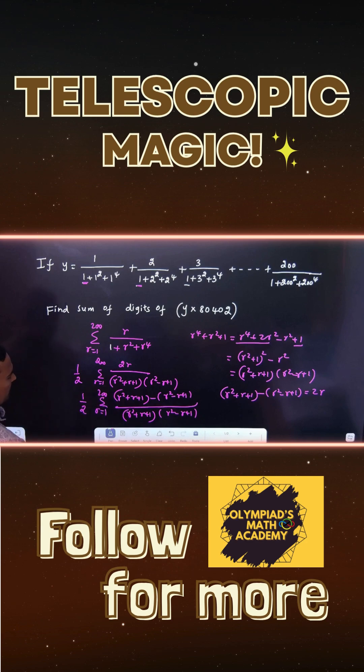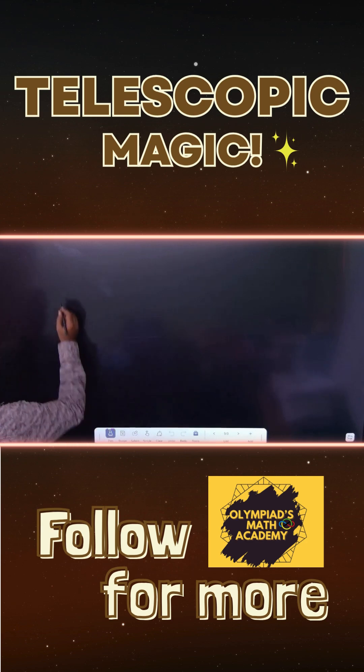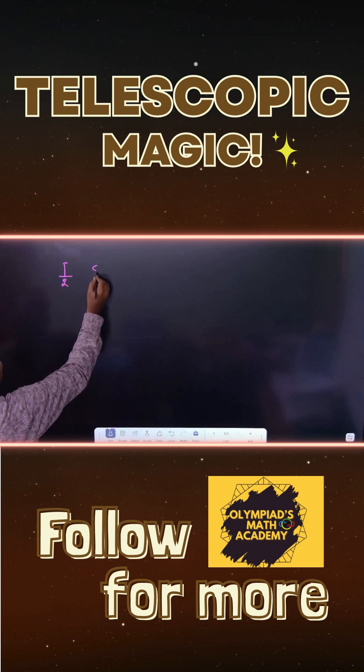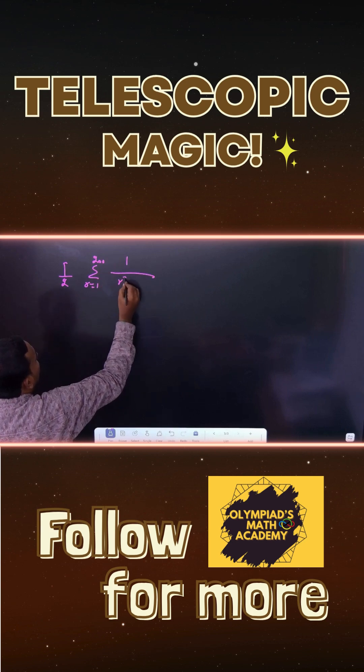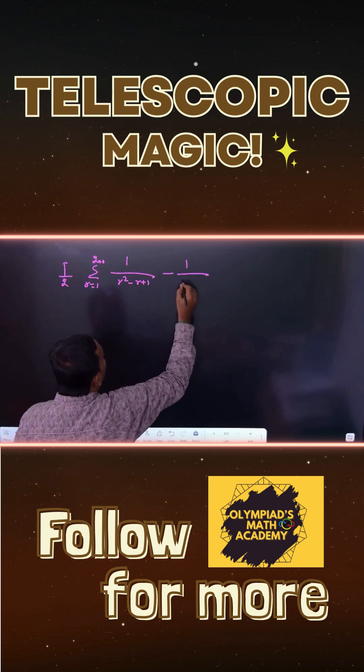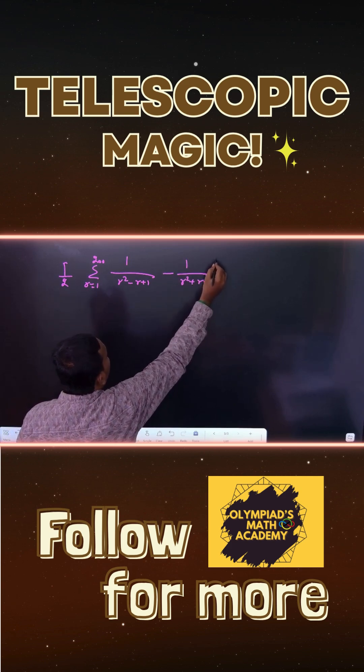Just divide it separately. What will we get? 1 by 2, summation r varies from 1 to 200, 1 by (r squared minus r plus 1) minus 1 by (r squared plus r plus 1), we will get.